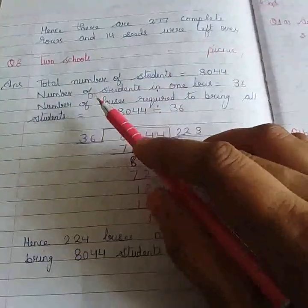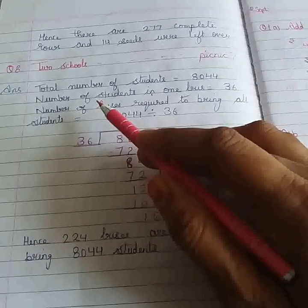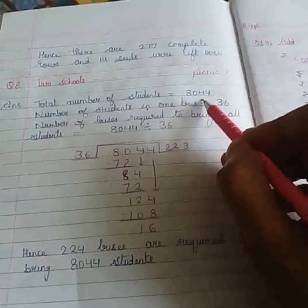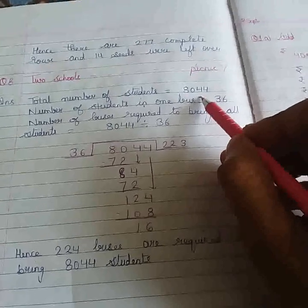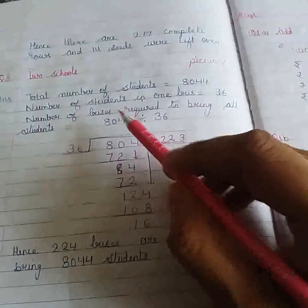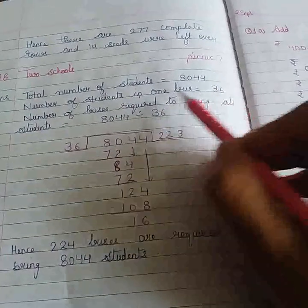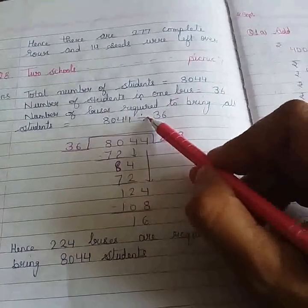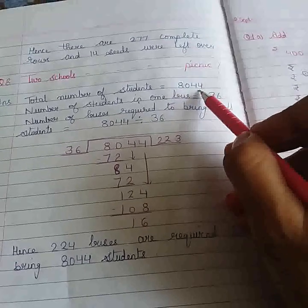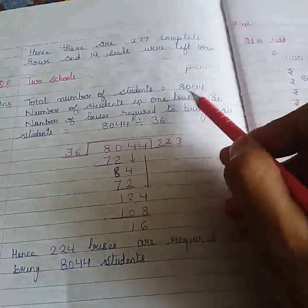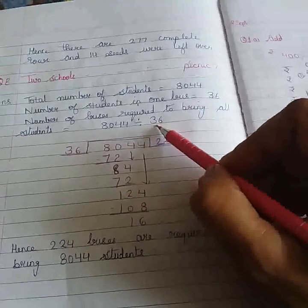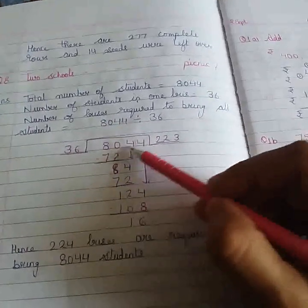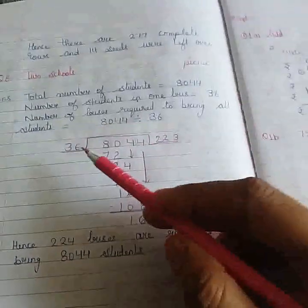Now this is the last question of this exercise. Here it is given that there are 2 schools where 8044 students are there, and they want to go on a ride for the school picnic. Each bus can hold 36 students. So again we are asking for the number of buses. So divide it: 8044 divided by 36.